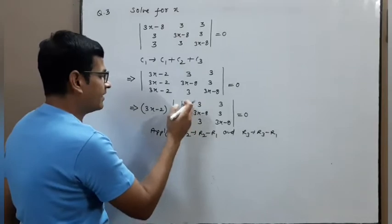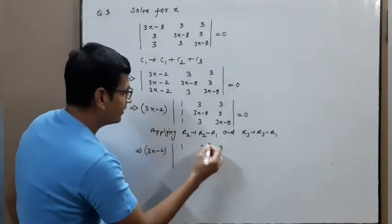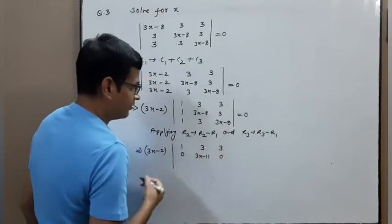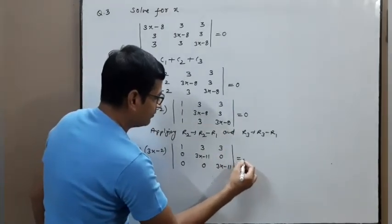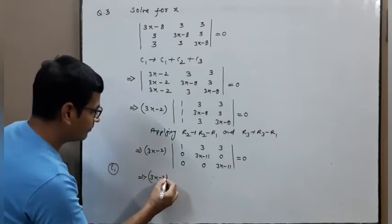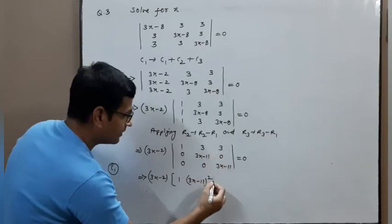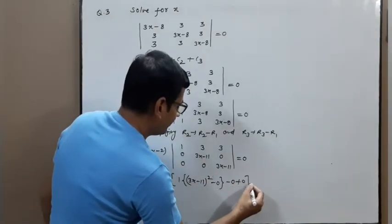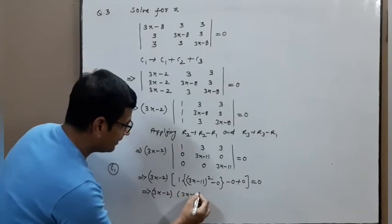Apply R2 → R2 − R1 and R3 → R3 − R1. Then (3x−2) times the resulting determinant: row 1 is 1, 3, 3; row 2 is 1−1=0, (3x−8)−3 = (3x−11), 3−3=0; row 3 is 1−1=0, 3−3=0, (3x−11). Expanding along C1.